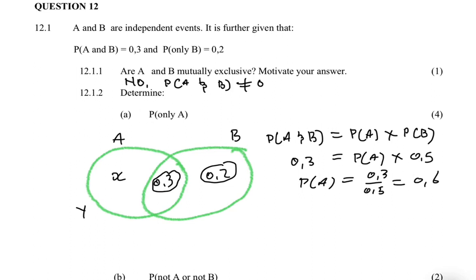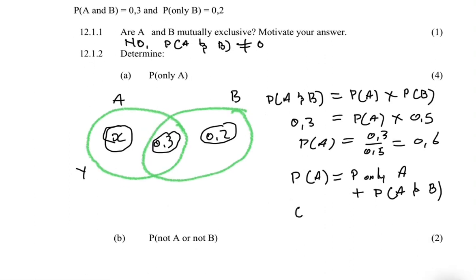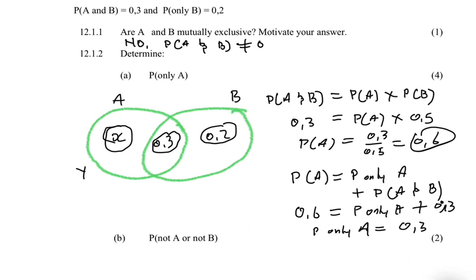Now we want the probability of only A, which is x. The probability of A equals the probability of only A plus the probability of A and B. You can see this on the Venn diagram. So: 0.6 equals the probability of only A plus 0.3. Taking 0.3 to the other side, the probability of only A equals 0.3.